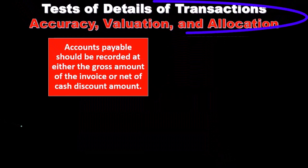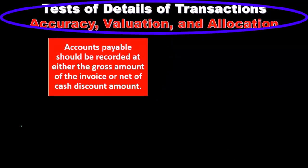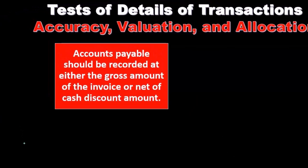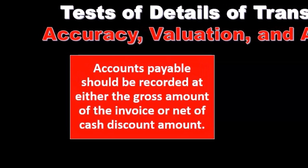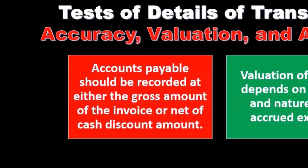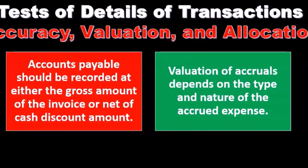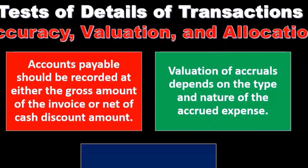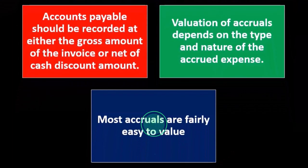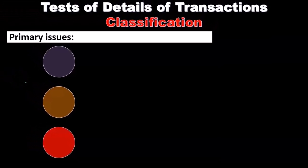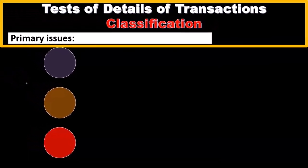For the assertion of accuracy, valuation, and allocation, accounts payable should be recorded at either the gross amount of the invoice or net of the cash disbursement amount. Valuation of accruals depends on the type and nature of the accrued expenses, though most accruals are fairly easy to value.